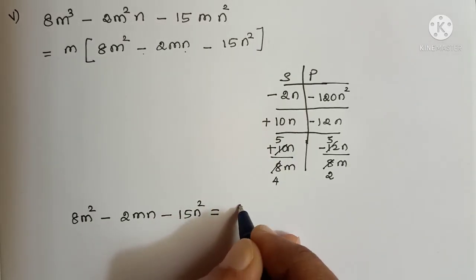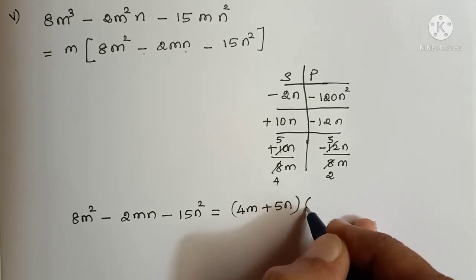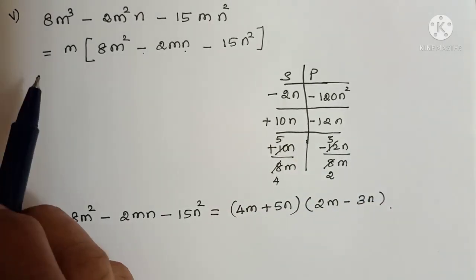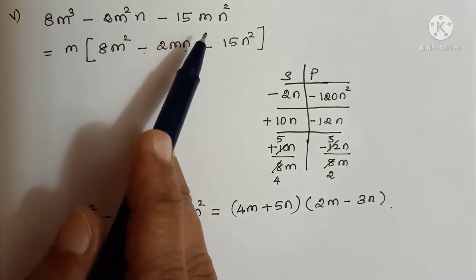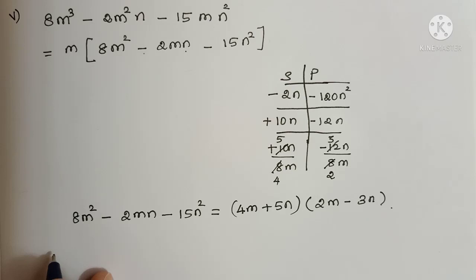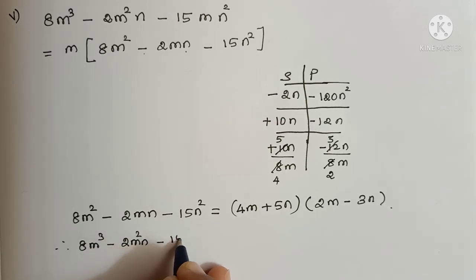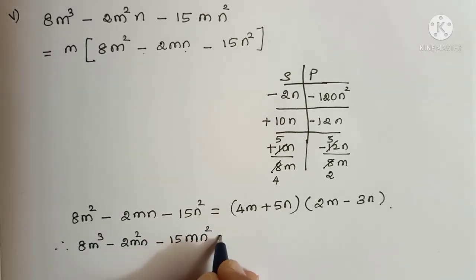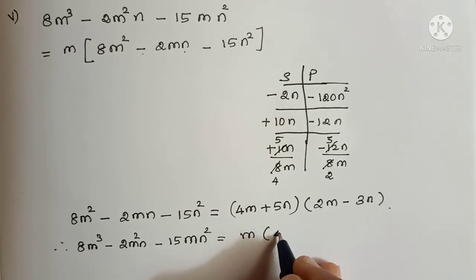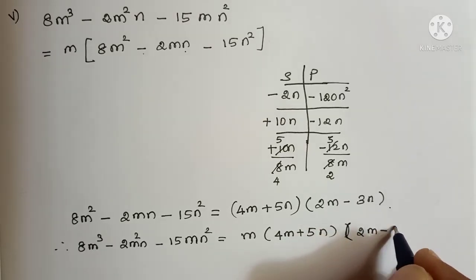So 8m squared minus 2mn minus 15n squared equals (4m + 5n)(2m - 3n). Therefore the full expression 8m cubed minus 2m squared n minus 15mn squared equals m into (4m + 5n)(2m - 3n).